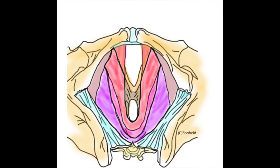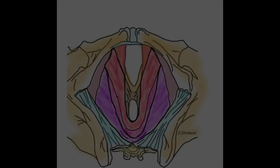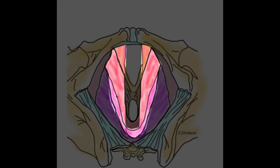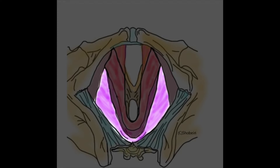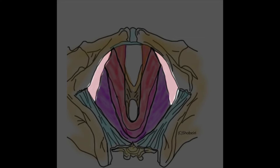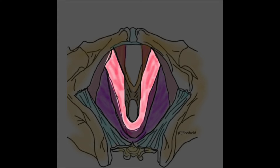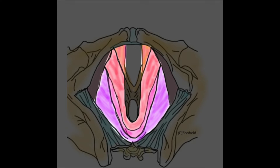Prior to going over the procedure, it is important to review the anatomy. In this image, looking at the pelvis from the perineal view, we can visualize pubovaginalis, puboanalis, puborectalis, pubococcygeus, iliococcygeus muscles, and obturator internus. Generally, we focus on injecting the puborectalis, pubococcygeus, and iliococcygeus muscles.